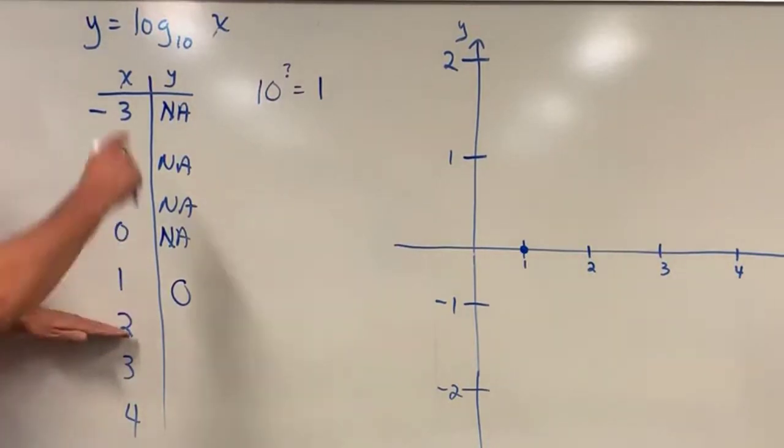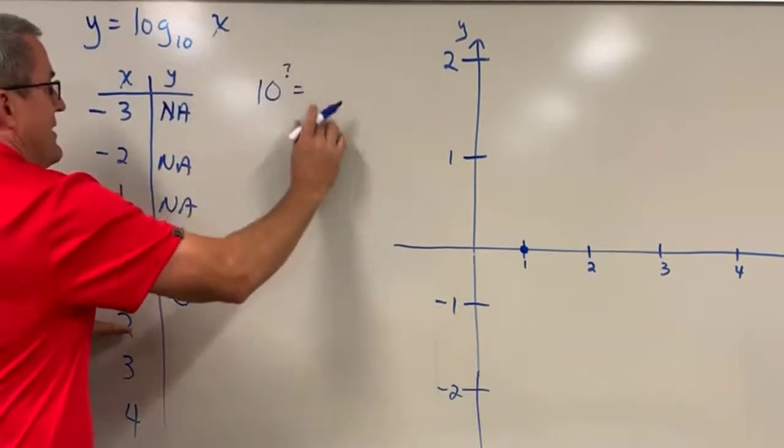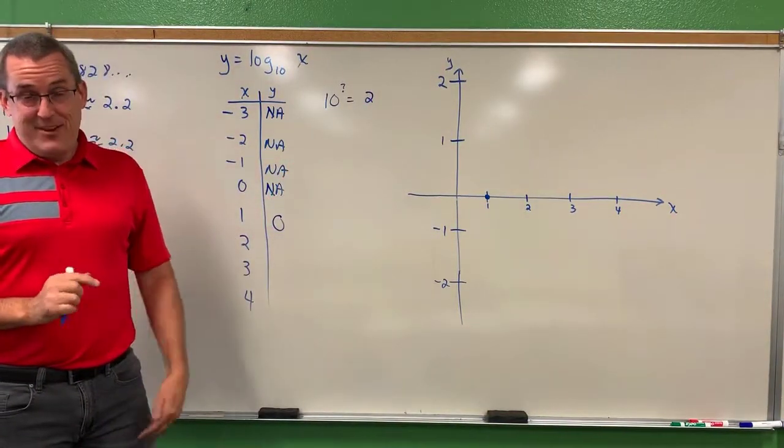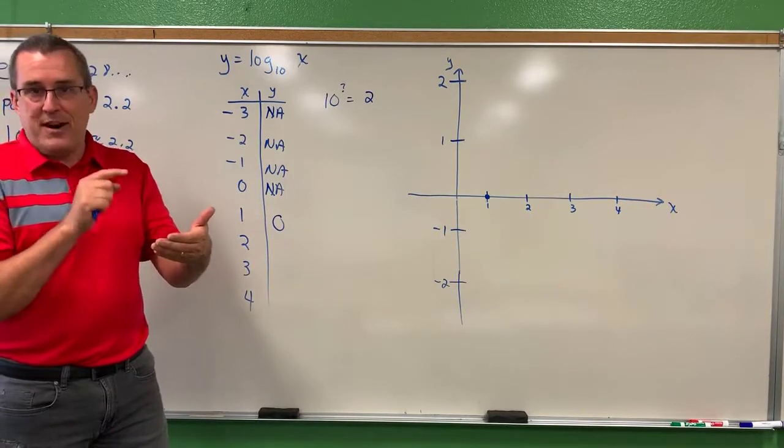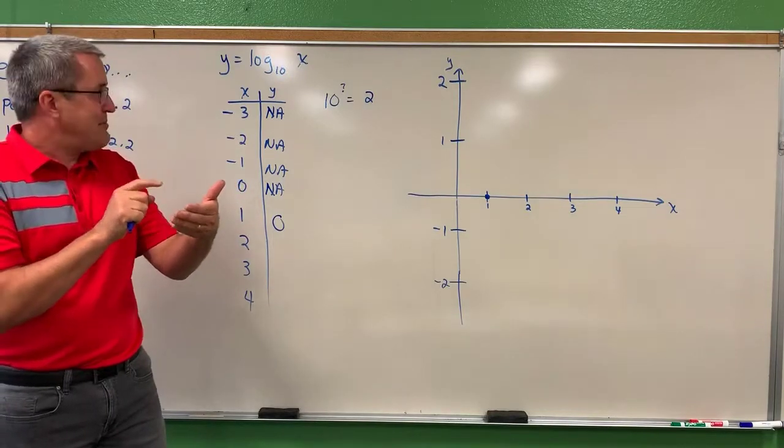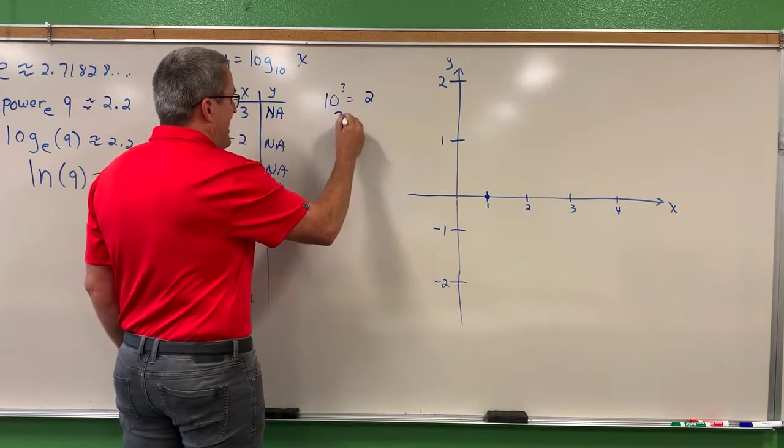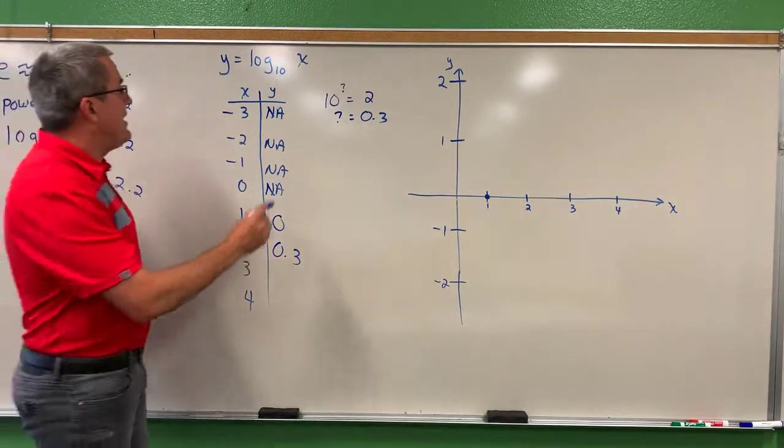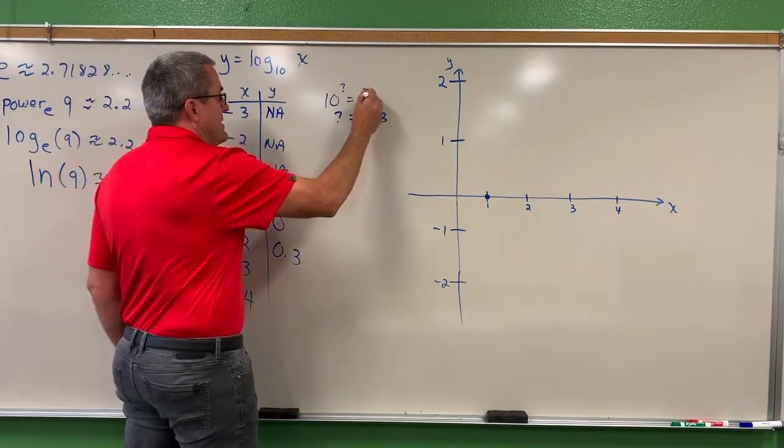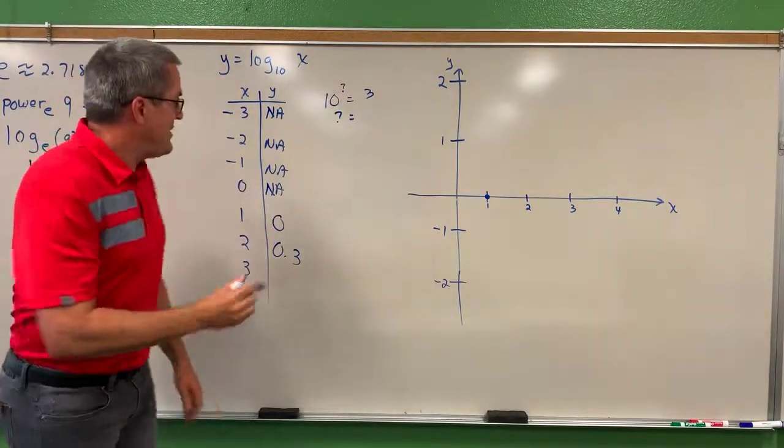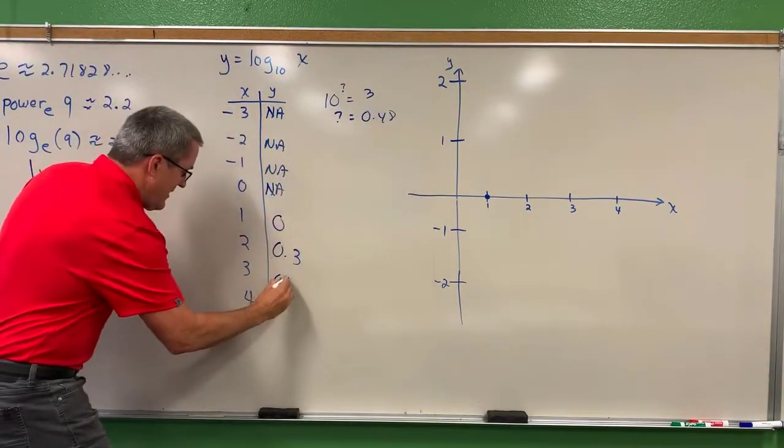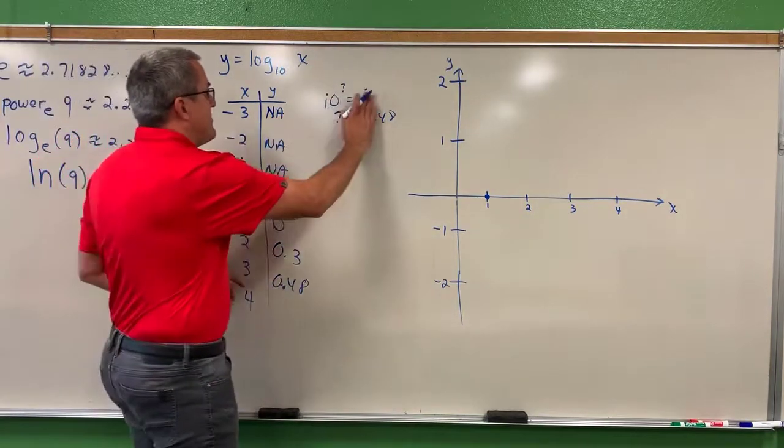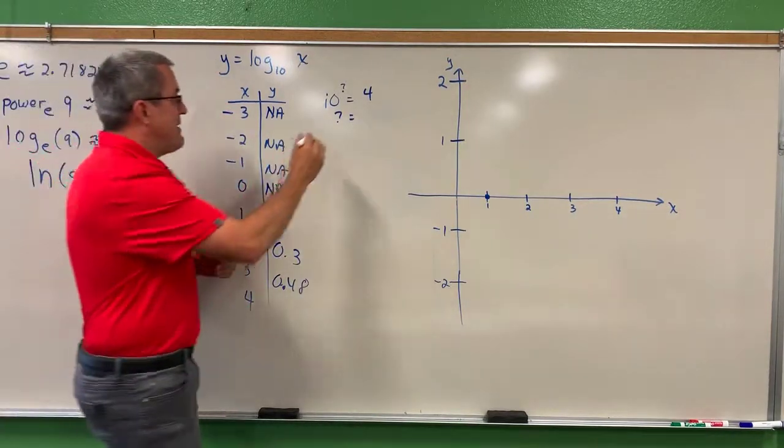What about when X is two? The power on 10 that produces two. What's the power on 10 that produces two? 10 raised to what power is two? Now this one's harder to do, but there is an answer. Grab your calculator, find your log button, or look on your phone app and find a log button and try it. What's the log of two? And if you do that, you'll find that the power here is about 0.3. 10 raised to about 0.3 is two. What about X equals three? Power on 10 that produces three. What's the power on 10 that produces three? Again, use a calculator for this one, but you'll find that it's about 0.48. And then let's just go to four. You'll start to see a pattern here. When X is four, a power on 10 that produces four, use your calculator and find out it's about 0.6.